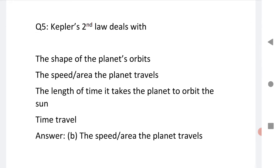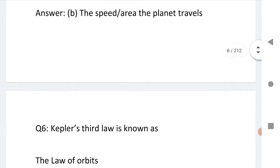Kepler's second law is also known as the law of areas. Next, fifth question. Kepler's second law deals with the speed, area, and the planet it travels.